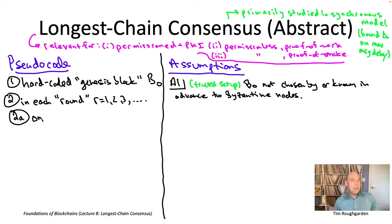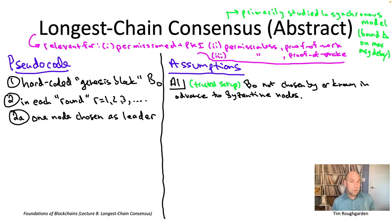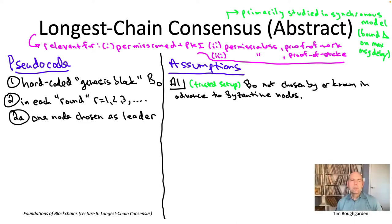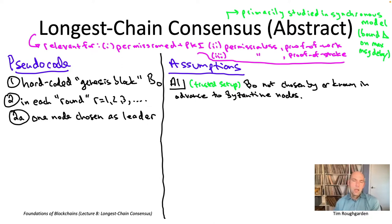What happens in a round? The first thing is that one of the nodes is chosen as a leader. How the leader gets chosen depends on which of the three settings we're in: permissioned, proof of work, or proof of stake.